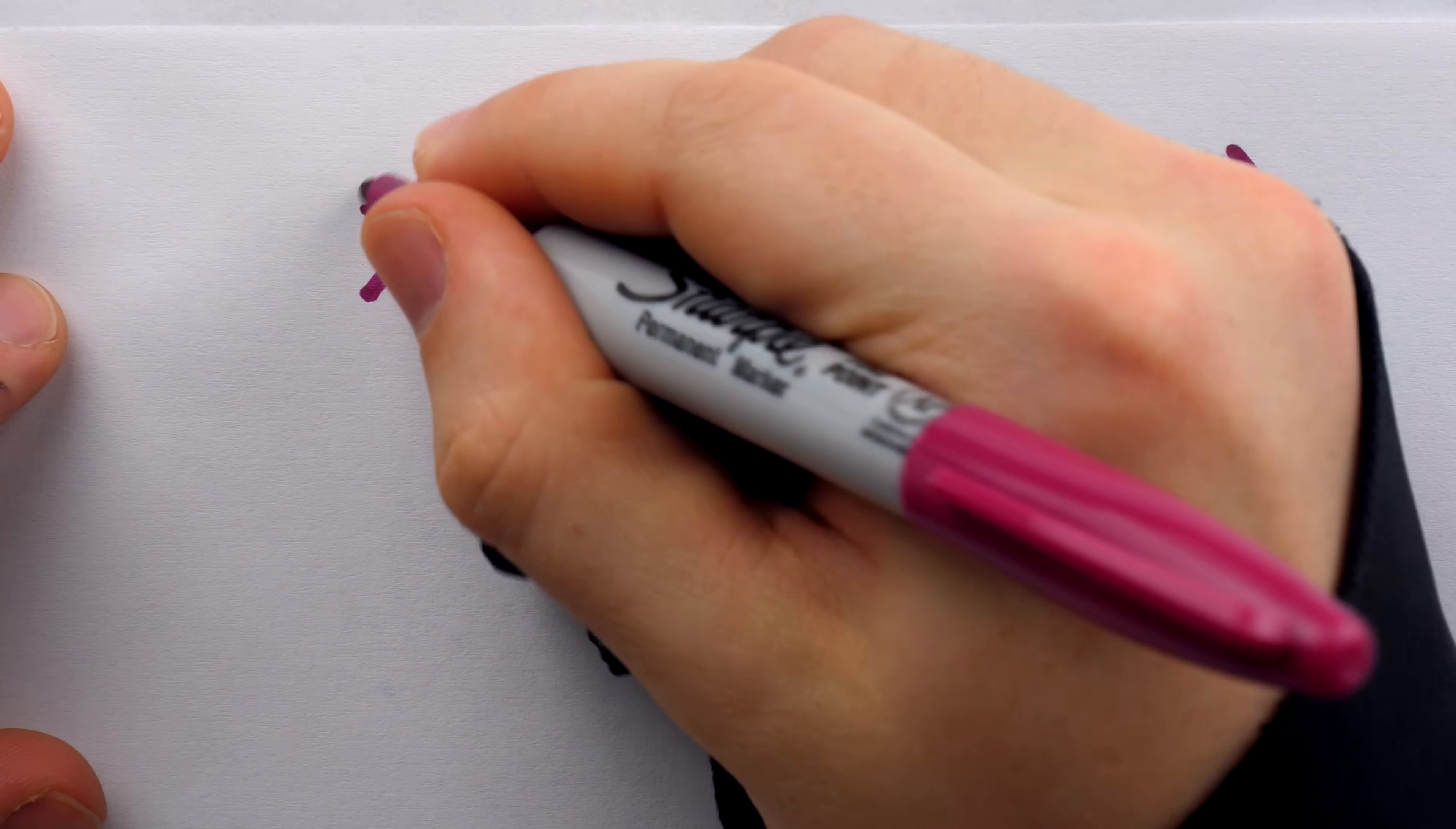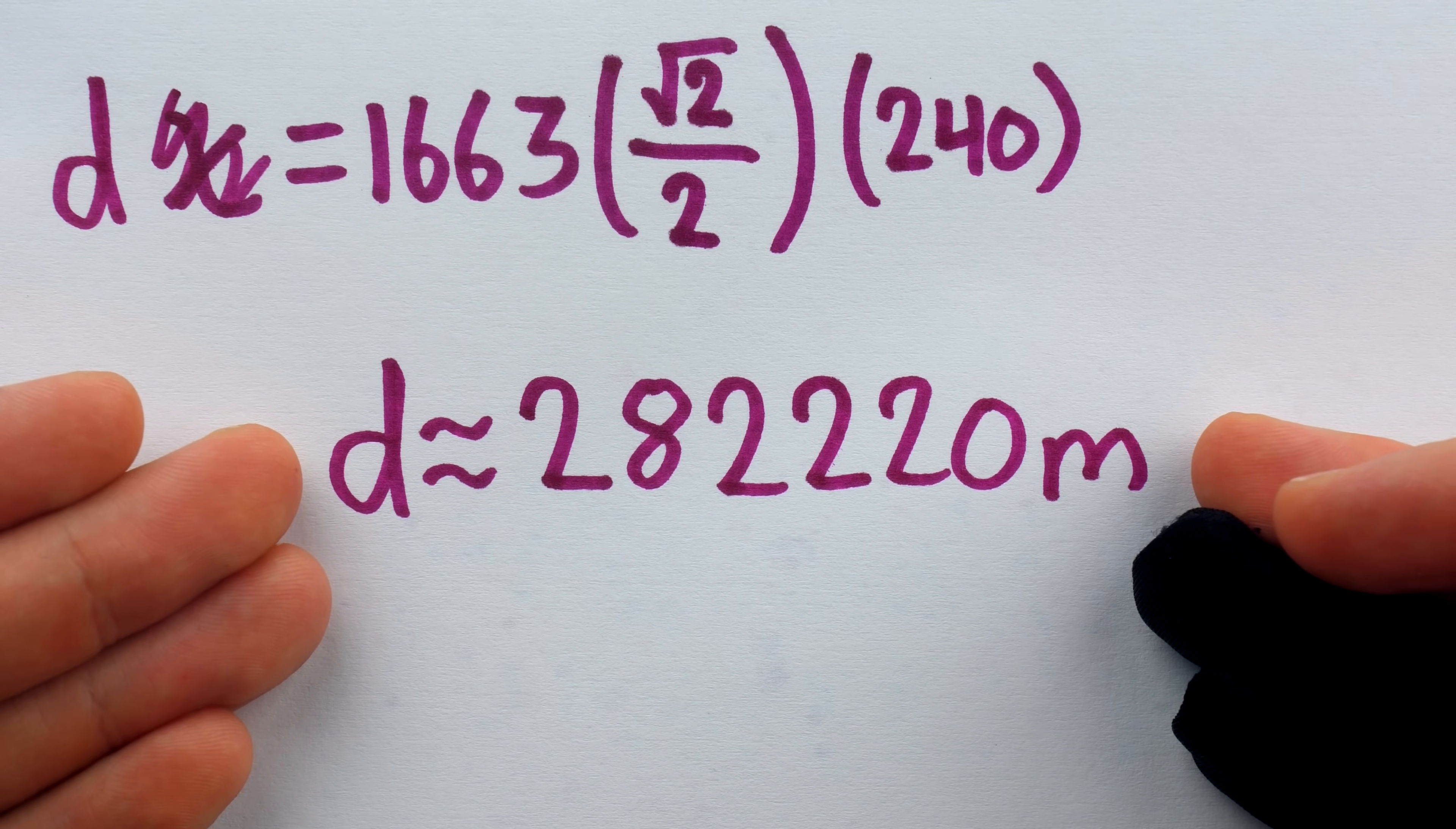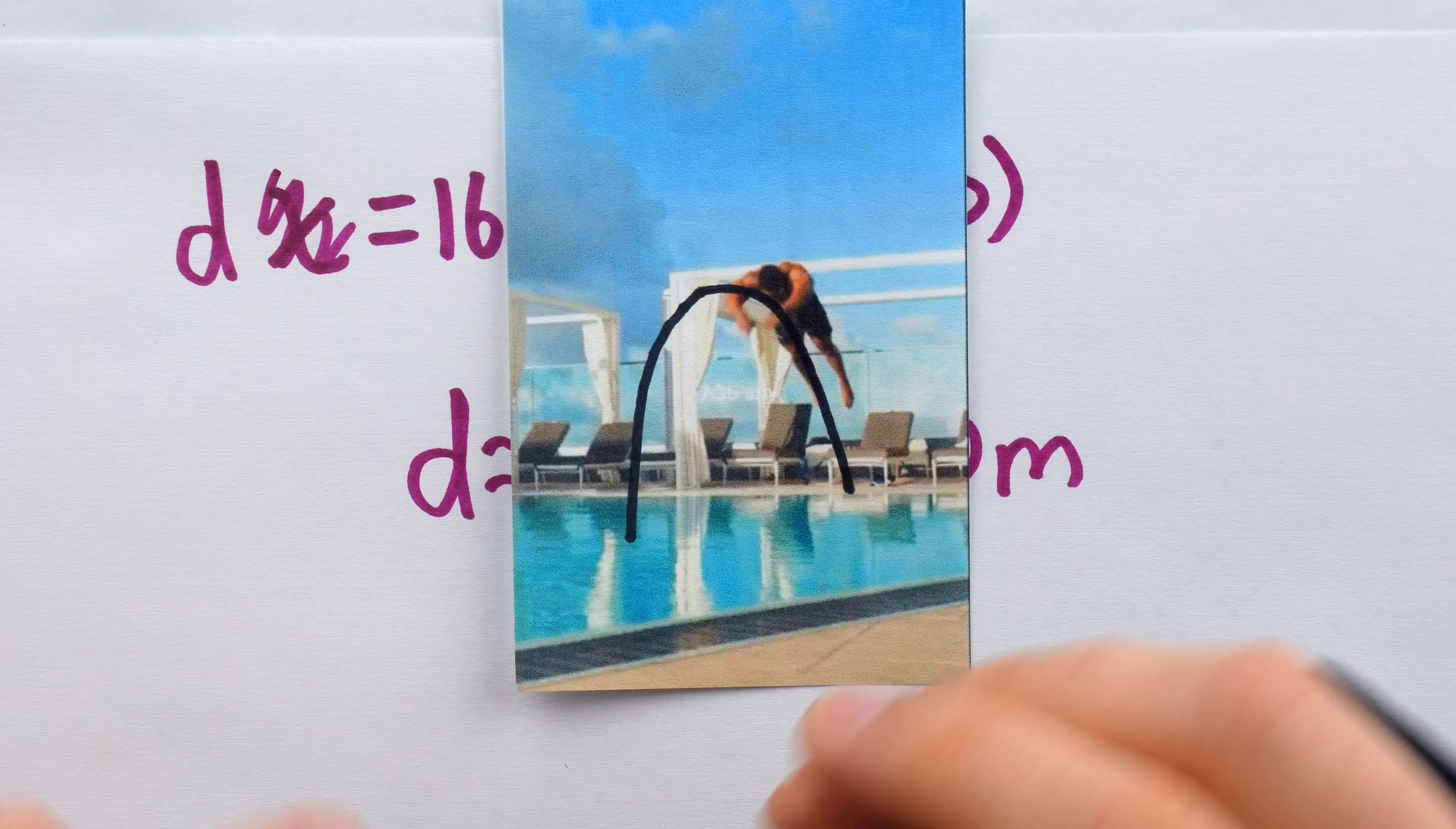Instead of X, perhaps we should call this D for the distance traveled. X, of course, changes as time changes. So we'll just call that D. And we just figured out that horizontal distance D is about 282,220 meters. That's the length of about 5,644 Olympic swimming pools. Or for the Americans watching, it's about 2,573 gridiron football fields. And I'd say that about checks out. I mean, this pool looks pretty big, and he did jump pretty far. But that initial launching speed still does seem a little suspicious.